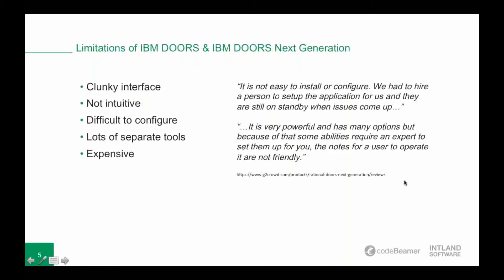Before I talk about the limitations, let me begin with the pros. IBM Doors now has a web-based system called IBM Doors Next Generation which comes with all the obvious favorable properties — you don't have to install anything and you can reach your system from anywhere as long as you have internet — and their fast and responsive support is also an important benefit. They undoubtedly have a wide array of functions, but this also brings me to their cons. Their interface is pretty clunky, especially at first glance — it's not very intuitive and it's pretty difficult to configure. Many people needed external consultation to set up their system, as you can see from one of the reviews on G2 Crowd quoted here on the slide.